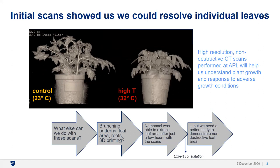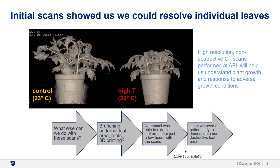Their first set of experiments was a high-temperature stress study on tomatoes. The effect of high temperature was visible in the CT images, and they were taken as an endpoint measure the day before harvest. These scans produced really nice images. Brainstorming led to ideas like analyzing branching patterns, leaf area, roots, and even 3D printing the plants. Nathaniel was able to extract leaf area in just a few hours, which turned out to be a fast way to get an otherwise difficult-to-measure phenotype.